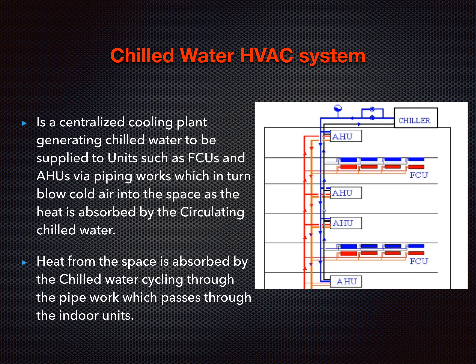A chilled water HVAC system has three main components — well, it has more than that, but let's focus on these three: the chiller, the air handling unit, the FCUs, and the pumps.